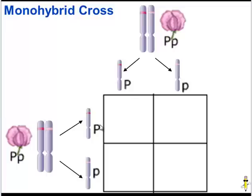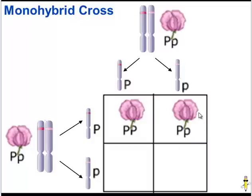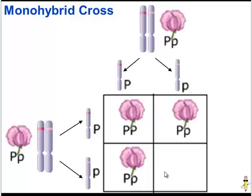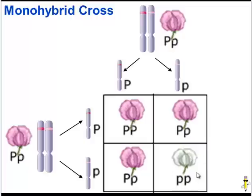Crossing our possible gametes in the Punnett square: if the dominant P gamete from each parent fuses during fertilization, the offspring has two dominant P's and would be purple. If a dominant P gamete fuses with a recessive p gamete, we also get a purple flower, but this time the genotype is heterozygous. We could also get another heterozygous purple flower. Or if both recessive p gametes fuse, the diploid offspring will have the recessive trait — a white flower — because both gametes carried a recessive allele.